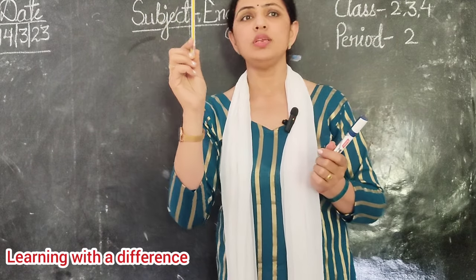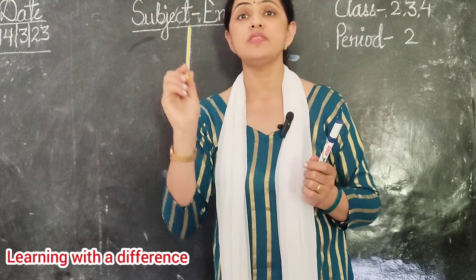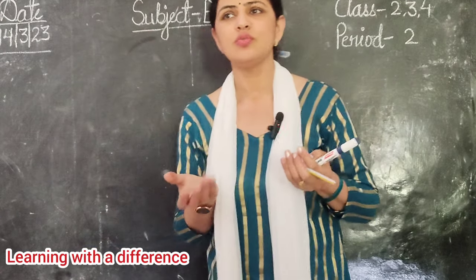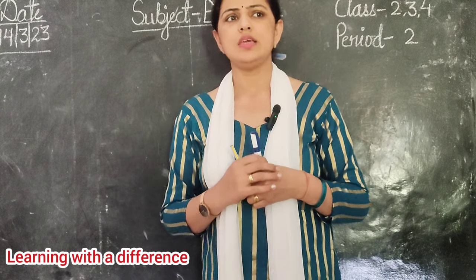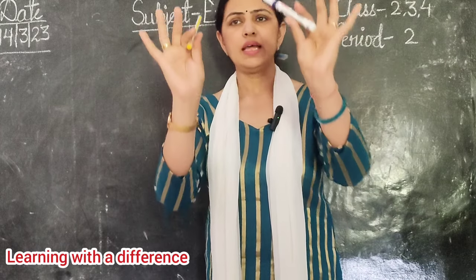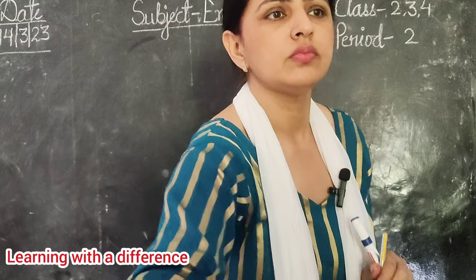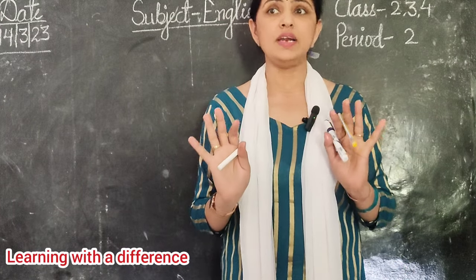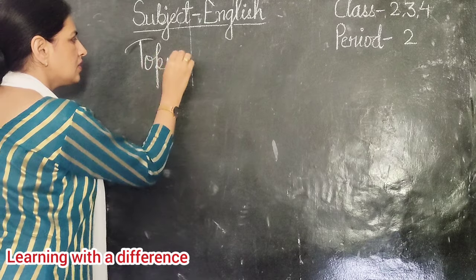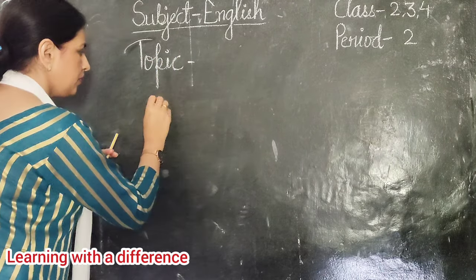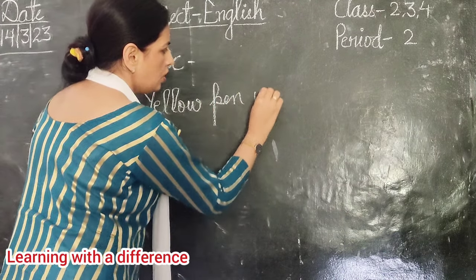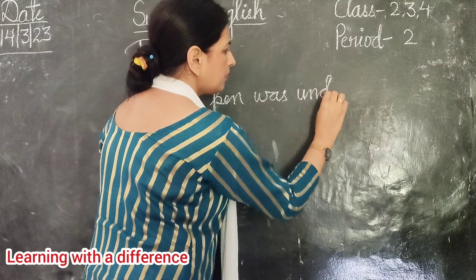I brought it for my best friend. So, my name is Meenakshi. What is your ma'am's name? Meenakshi. Ma'am had lost two pens. Now I found my pens — one pen was under the table. Yellow pen was under the table.